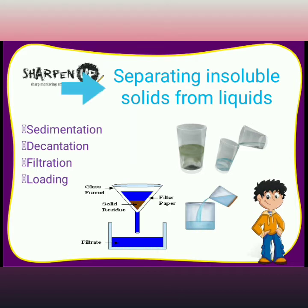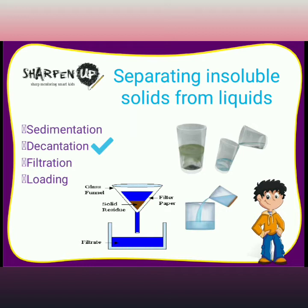Now let's discuss separating insoluble solids from liquids. The first method is sedimentation: the process in which the heavier particles of an insoluble solid in a liquid settle down at the bottom. This is known as sedimentation. Decantation is the process that follows sedimentation — it involves pouring out the liquid without disturbing the sediments.